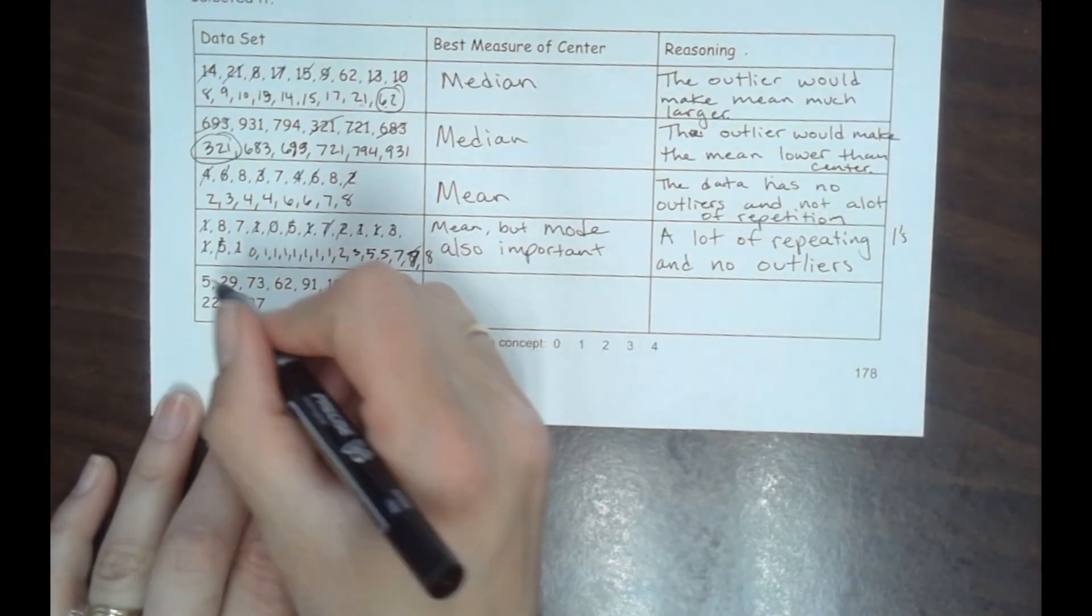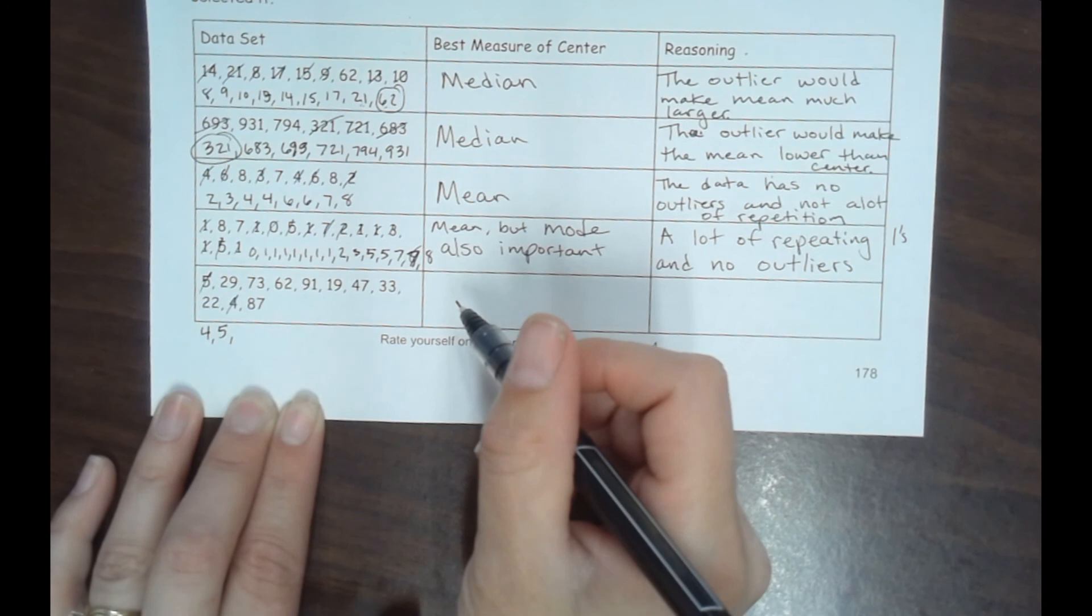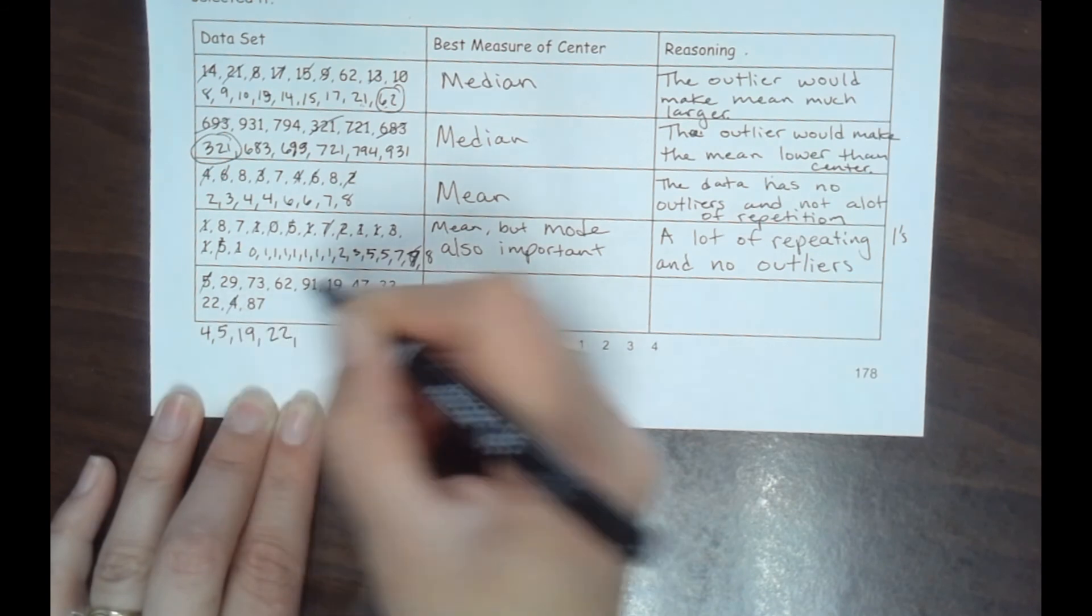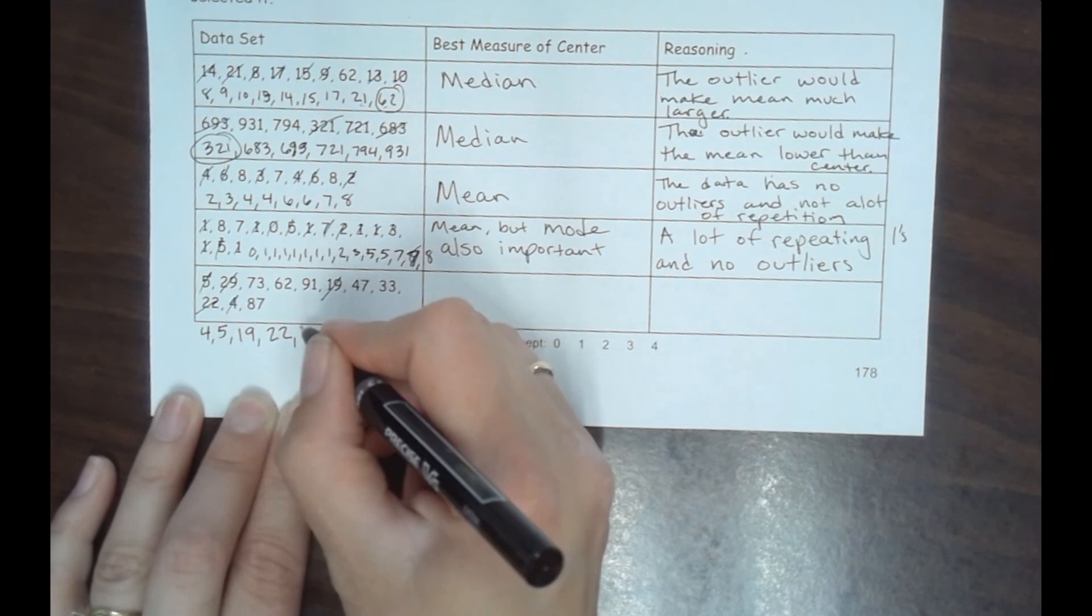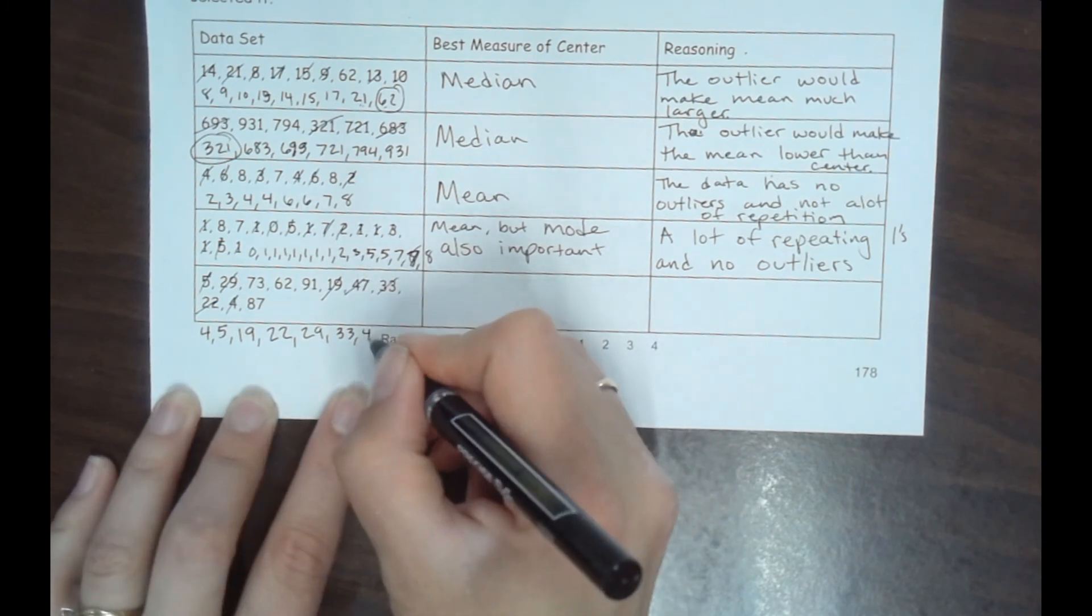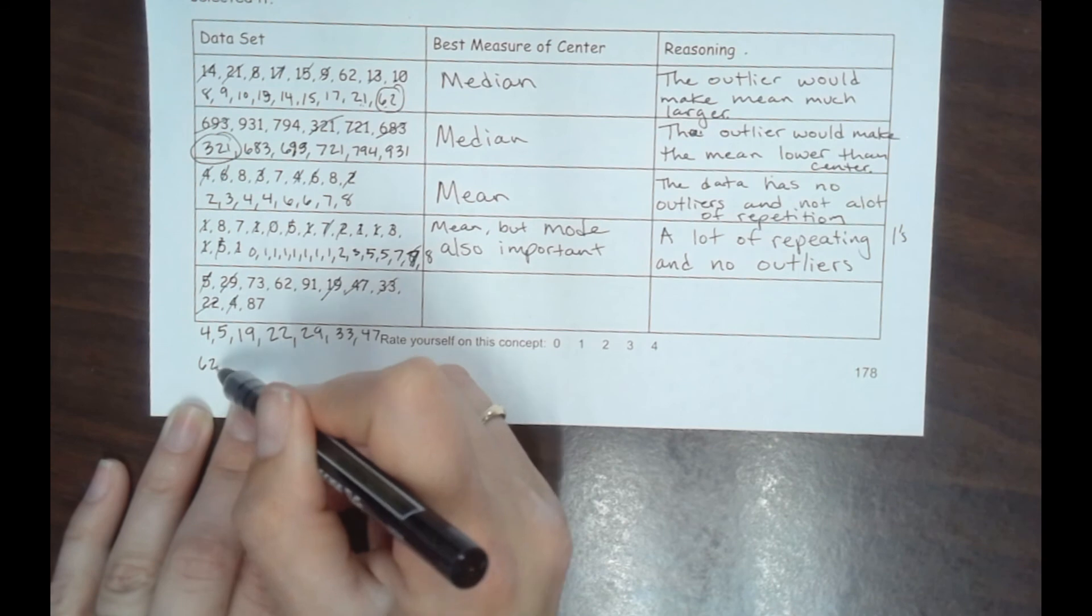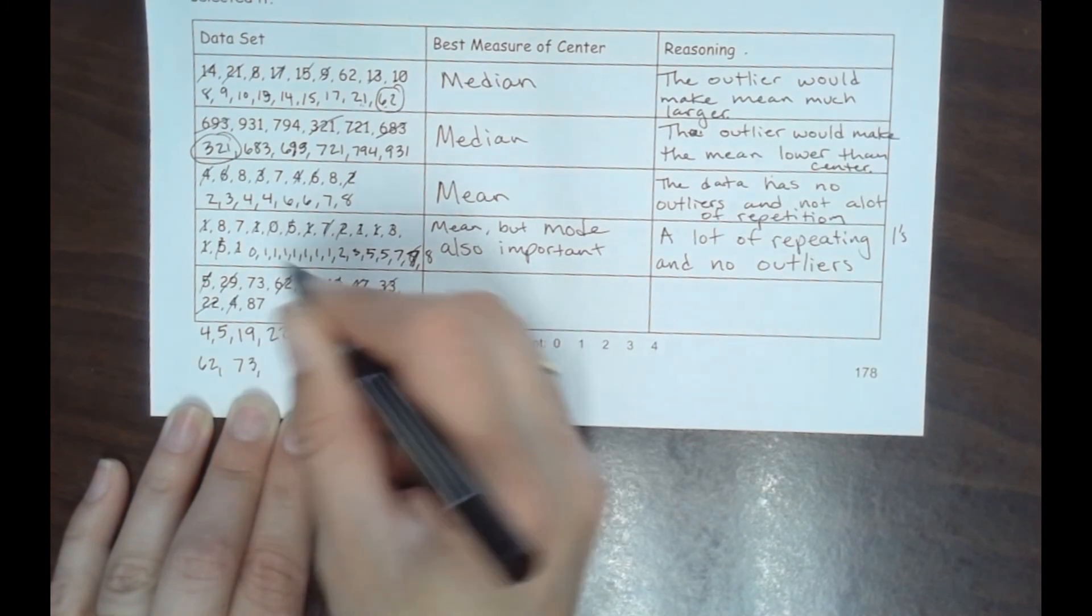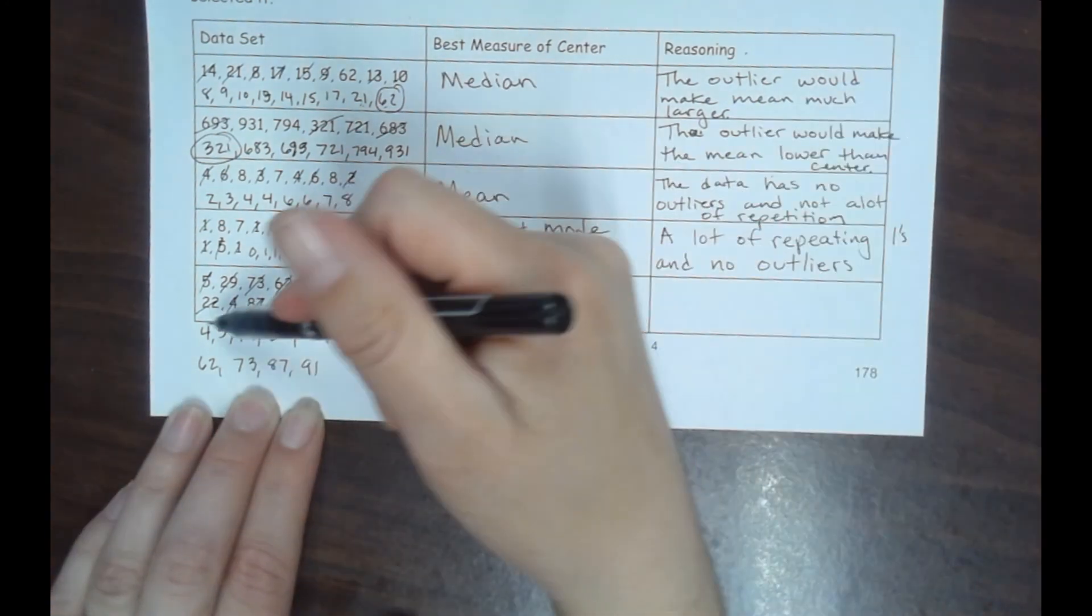All right, let's do this last one. So we have 4, 5, 19, 22, 22, 29 would be next, 33, 47, then we have 62, 73, 87, and 91.